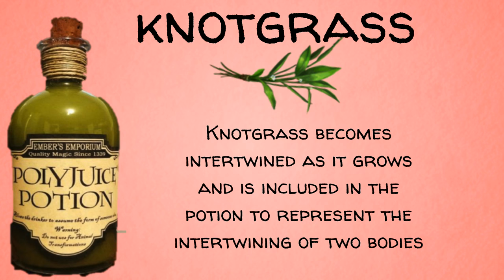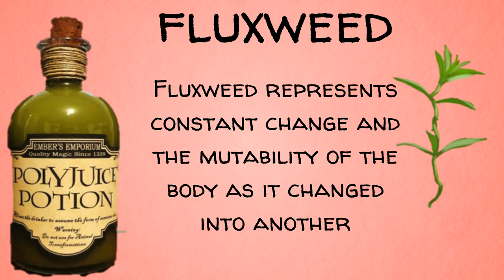Knotgrass is the next ingredient for the Polyjuice Potion. For what reason has JK chosen Knotgrass? Well, Knotgrass becomes intertwined as it grows, and it is included in the potion to represent the intertwining of two bodies.